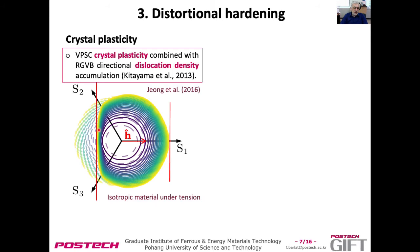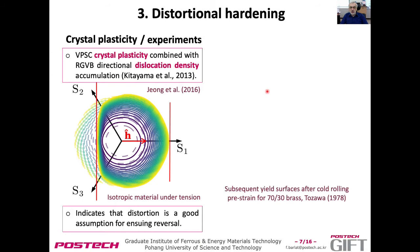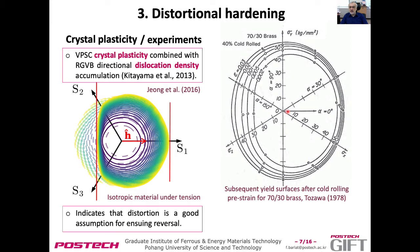This flat is in the direction normal to loading. Looking at experiments by Professor Tozawa, where the material was pre-strained by rolling 40% and then reloaded in different directions at 0.2% and up to 0.3% offset strain, we can see the yield surface is also distorted. There is a little translation, but what I see mostly is distortion.